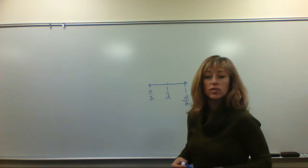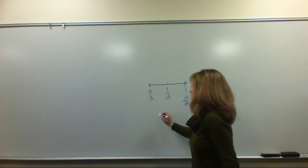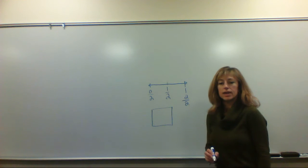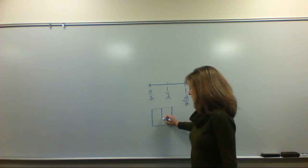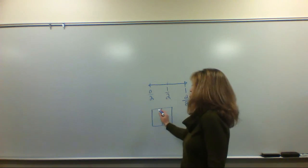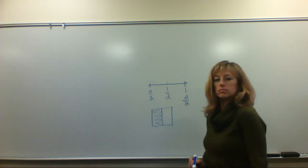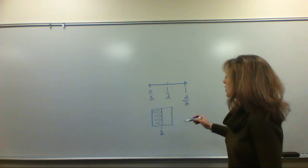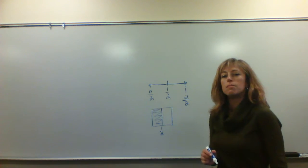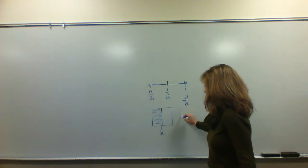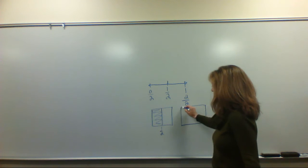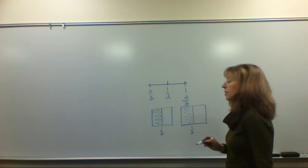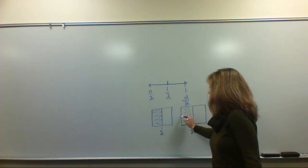Now we're going to practice making some equivalent fractions. Underneath your number line if you would let's draw a square. In that square I want you to partition it in the middle again like you did with your fraction strip. Let's shade it in on the left side to show that this is one half. We know where that is on the number line, it's right here at one half.